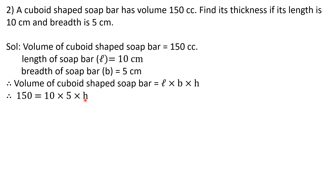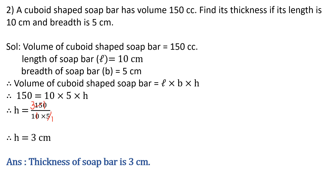Solving h = 150 ÷ 50: cancel the zeros — 150/10 = 15, then 15 ÷ 5 = 3. Therefore h = 3 centimetres. The thickness of the soap bar is 3 centimetres.